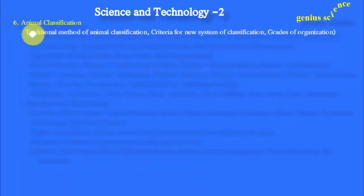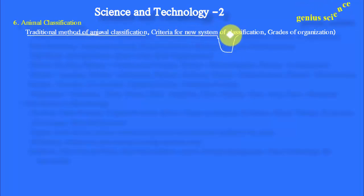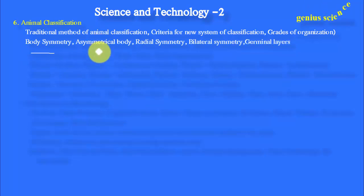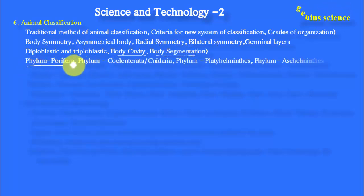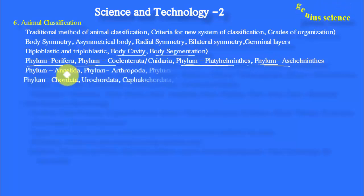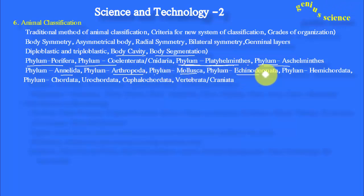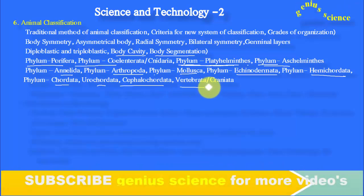The sixth chapter is Animal Classification, which is the biggest chapter in our syllabus. Topics include the Traditional Method of Animal Classification — not strictly necessary — and the Criteria for the New System of Classification. Important points: Grades of Organization, Body Symmetry — Symmetrical Body, Radial Symmetry, Bilateral Symmetry — Germinal Layers, Diploblastic and Triploblastic, Body Cavity, and Body Segmentation. The phyla to know are: Porifera, Coelenterata, Platyhelminthes, Aschelminthes, Annelida, Arthropoda, Mollusca, Echinodermata, Hemichordata, Chordata, Urochordata, Cephalochordata, and Vertebrata. Under Subphylum Vertebrata: Class Pisces, Amphibia, Reptilia, Aves, and Mammalia — this entire line is important.